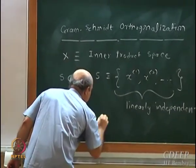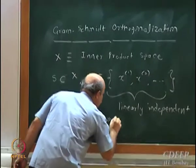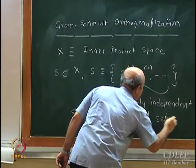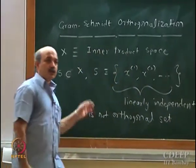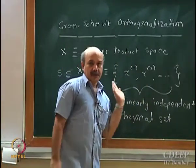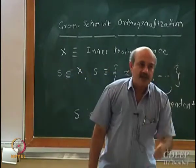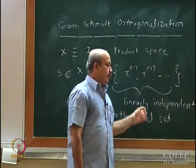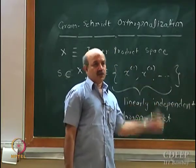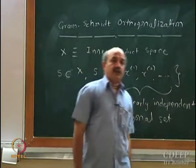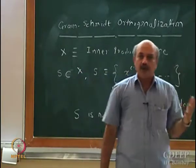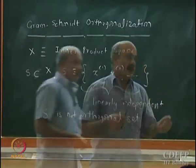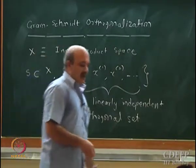What is an orthogonal set? The vectors are mutually orthogonal — you take any pair of vectors and find the inner product, and the inner product will be 0. So S is not an orthogonal set, and I would like to generate an orthogonal set because orthogonal sets are very useful when you do modeling, applied mathematics, and numerical computations. So how do I do that?